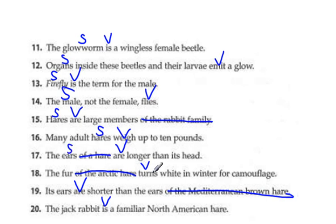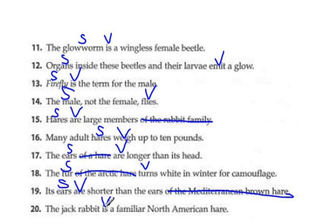18, who or what turns? The fur turns. That's why you get rid of that 'of' — make sure you're not picking the wrong one. In 19, who or what are shorter? The ears. And 20, what is a familiar North American hare? The jackrabbit.